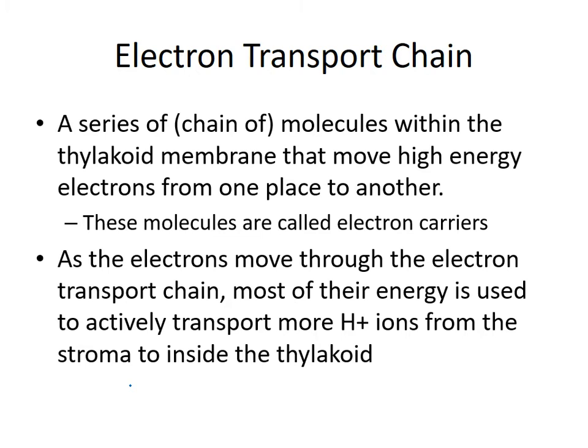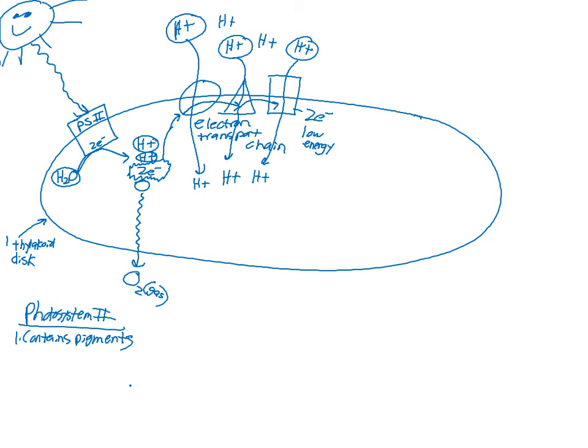A series or chain of molecules within the thylakoid membrane called the electron transport chain — also called electron carriers — move those high-energy electrons from one place to another. As they move the electrons through those electron carriers, the energy is used to actively transport H+ ions from outside the thylakoid, which is called the stroma, to inside the thylakoid. We're not done with these electrons yet — there is another photosystem called photosystem I.